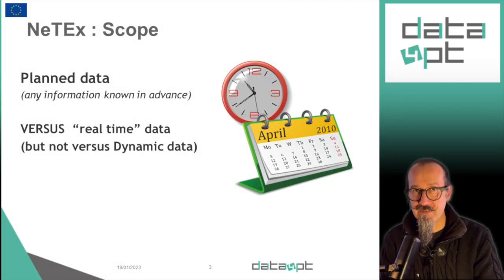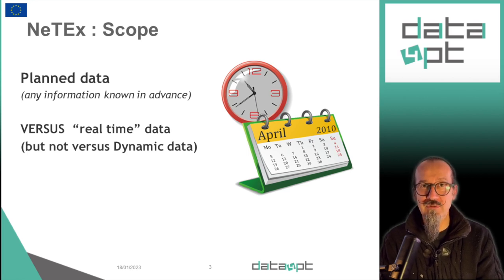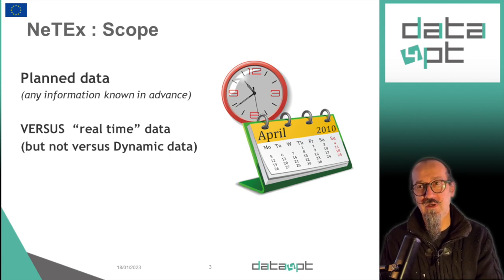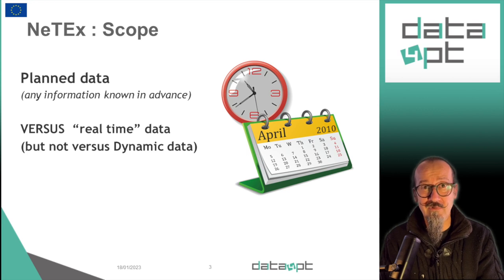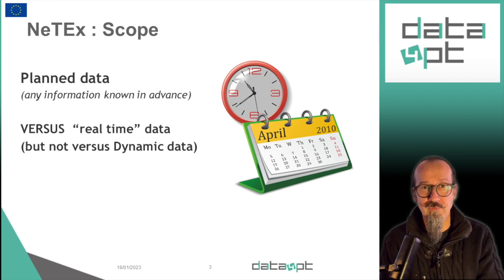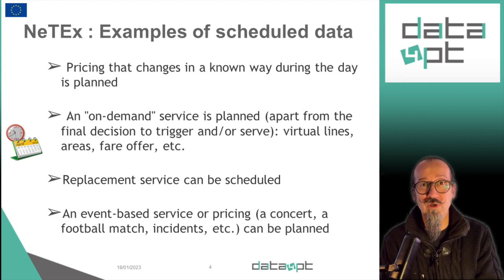NETEX is focusing on planned data and information, meaning any information known in advance is part of NETEX. Planned information has to be understood as opposed to real-time information, not as opposed to dynamic information. For example, a special service with relative fares defined for a specific event like a football match is defined in advance. Also, replacement services can be defined in advance and then only triggered under certain conditions like bad weather. And the price of a parking which is evolving during the day is dynamic but is known in advance, so it is planned.